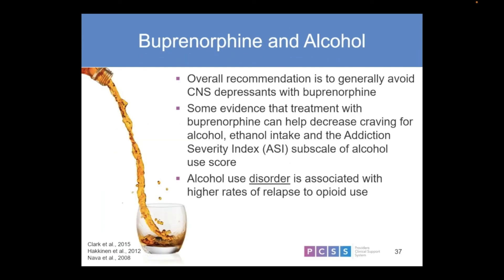Buprenorphine and alcohol should also be avoided — alcohol is clearly a CNS depressant. There is some evidence that treatment with buprenorphine can help reduce cravings for alcohol, and regular contact allows interaction around alcohol use. Some patients get their opiate problem under control and then fall into regular drinking, which you want to help them avoid. Alcohol use disorder is associated with higher rates of relapse to opioids. This applies to cannabinoids and any intoxicants — using any intoxicant reduces resolve and can be stimulated by their drug of choice, which is often opioids.